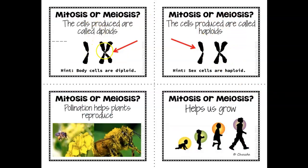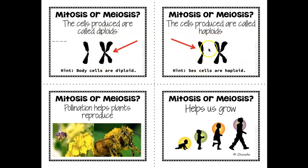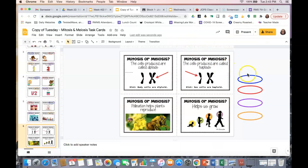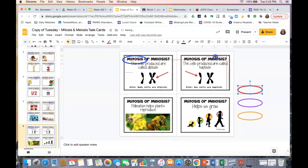Mitosis or meiosis: the cells produced are diploids, and the cells produced are haploids. The hint says body cells are diploid and sex cells are haploid. A haploid shows you half of the chromosome pair; a diploid shows the two already combined. Diploid cells are produced by mitosis, and haploid cells — only having half — would be meiosis, because half goes to sperm and half goes to egg. So the first one is mitosis and the second is meiosis.